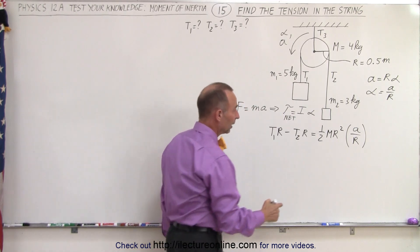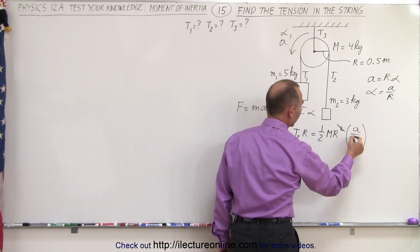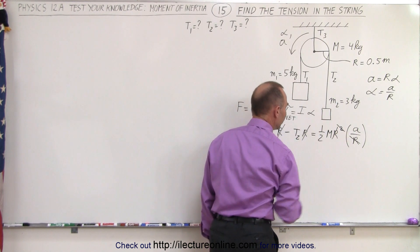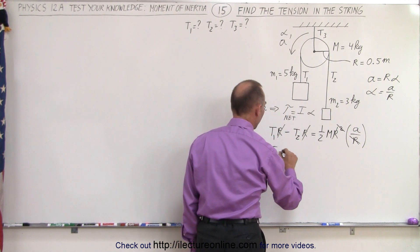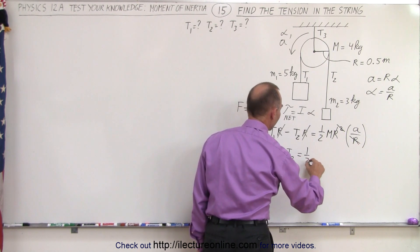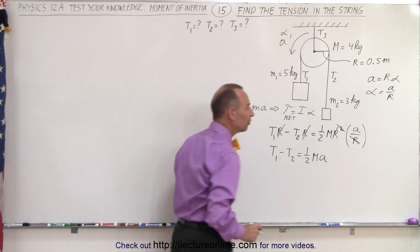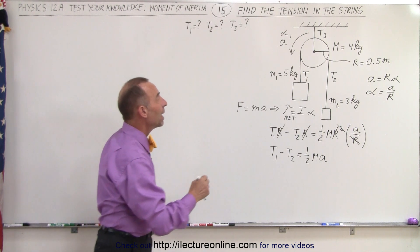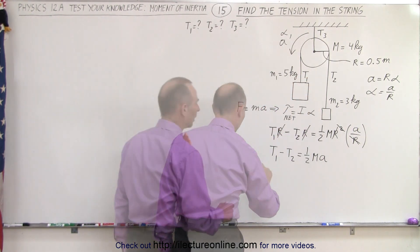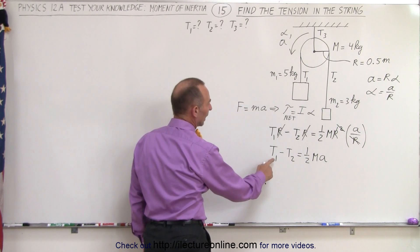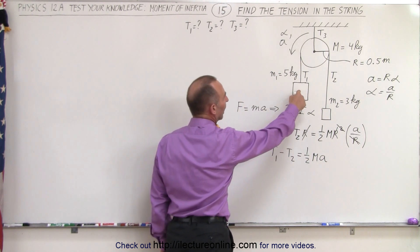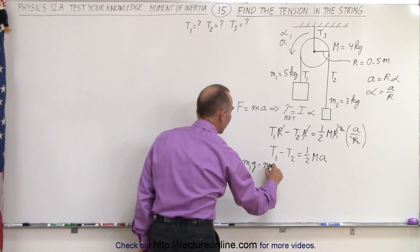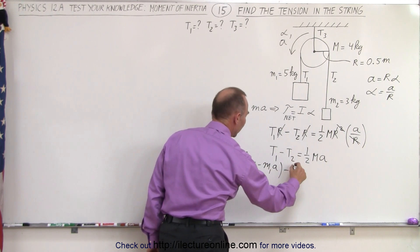Notice that this r cancels with one of the r's on the right side, and then the remaining r's on the left and right sides cancel as well, which leaves us with T1 minus T2 equals one-half times the mass of the pulley times the linear acceleration. Now, T1 is going to be m1·g minus m1·a because the heavy weight is accelerating downward, so T1 = m1·g - m1·a.